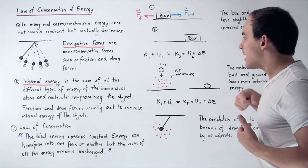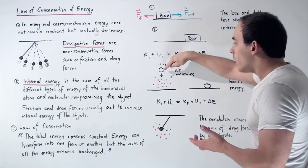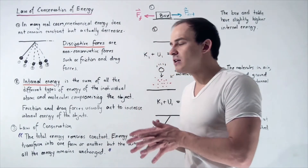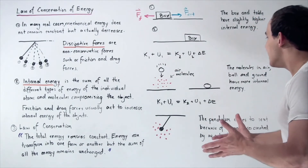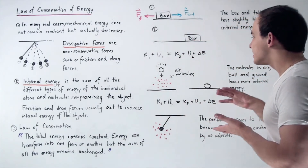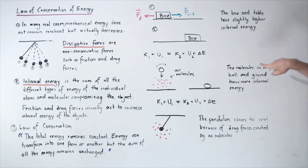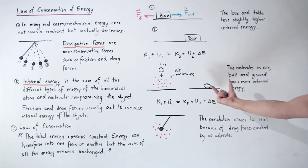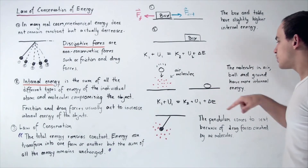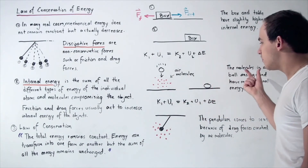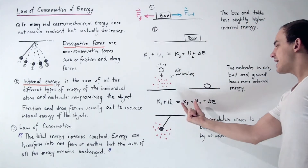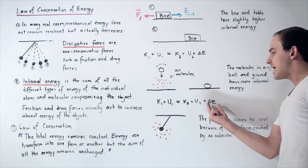At the end, the macroscopic object hits the ground, and that kinetic energy is entirely transformed into increasing the internal energy of the ground and the object. The object and the ground will be at a slightly higher temperature because they will have slightly higher internal energies. The molecules in the air, the ball, and the ground all have more internal energy because some of that gravitational potential energy and kinetic energy has gone into increasing internal energy. The formula is the same: the sum of initial kinetic and gravitational potential energy equals the sum of final kinetic and potential energy plus the change in internal energy.